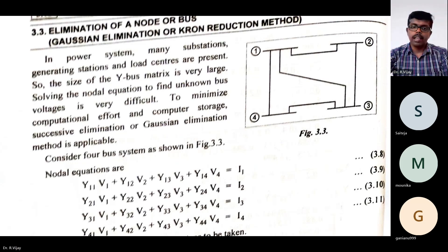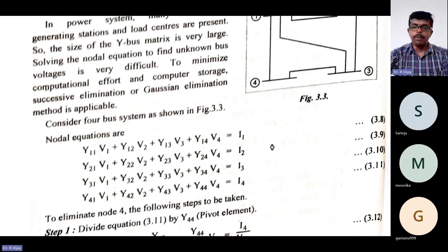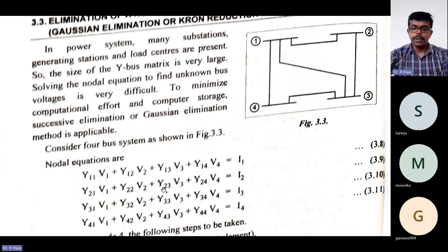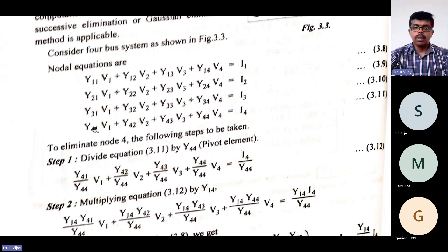For node 1, the nodal equation is: Y11·V1 + Y12·V2 + Y13·V3 + Y14·V4 = I1. Similarly, the second equation is: Y21·V1 + Y22·V2 + Y23·V3 + Y24·V4 = I2. The third equation is: Y31·V1 + Y32·V2 + Y33·V3 + Y34·V4 = I3. And the fourth equation is: Y41·V1 + Y42·V2 + Y43·V3 + Y44·V4 = I4. So we have 4 nodal equations in total, labeled equations 1 through 4.